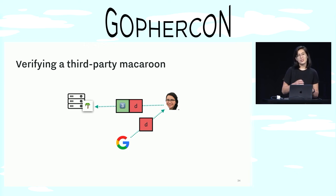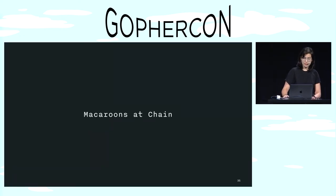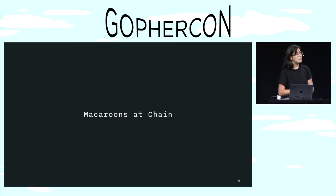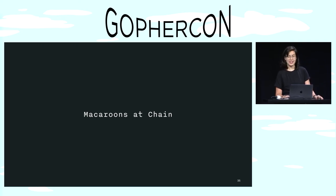So this starts to look a bit like OAuth, but with fewer round-trip requests. We got pretty excited about this at Chain, partly because it's just interesting and partly because we saw how macaroons could solve a problem that we had. And to explain that, I have to tell you a little about what we do at Chain.